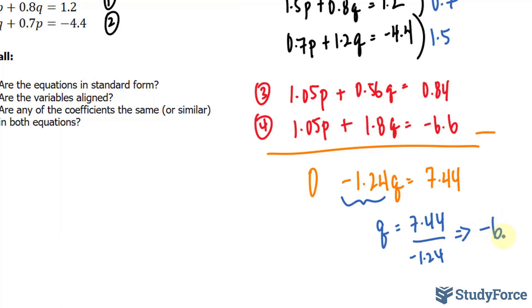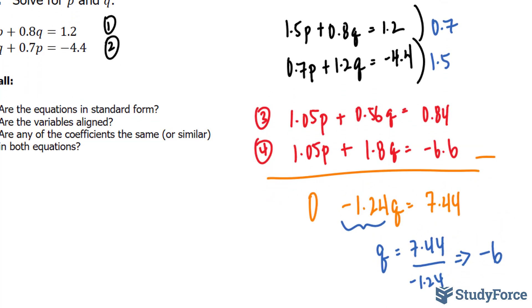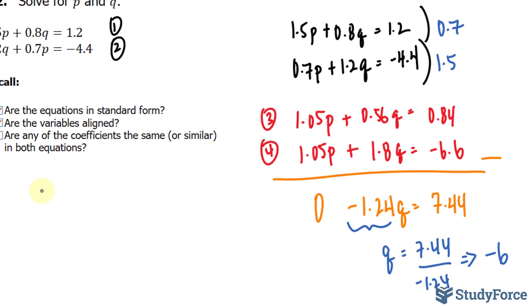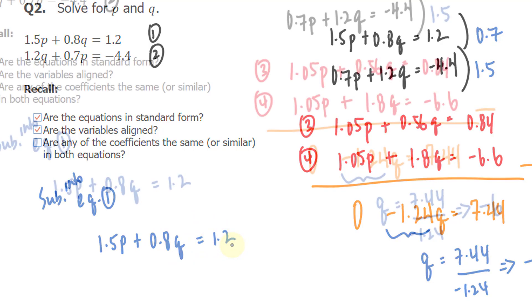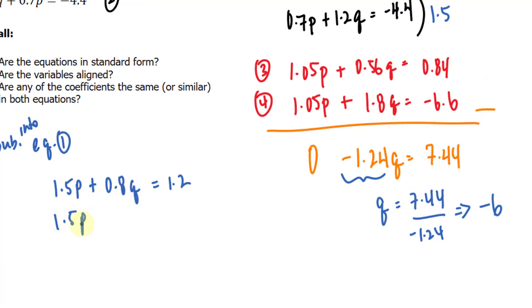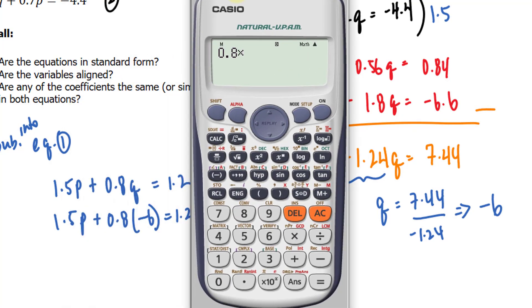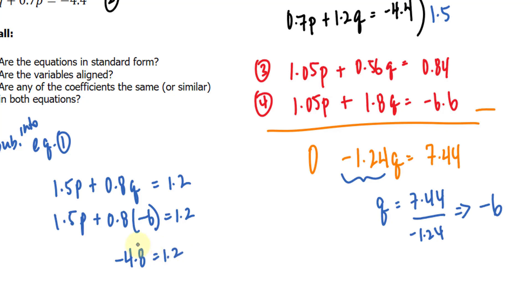Now we must take negative 6 and substitute it into any of our former equations. We have four options to choose from. Any one of them will lead to the answer for p. Let's choose equation number 1 as a default. So sub into equation 1. Remember it was 1.5p plus 0.8q is equal to 1.2. Substituting into q and then solving 0.8 times negative 6 is negative 4.8.